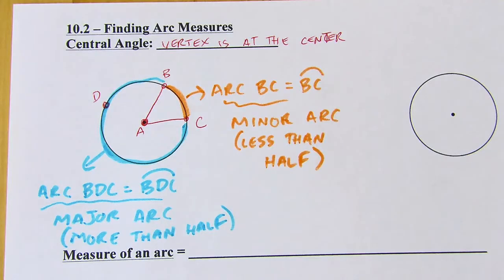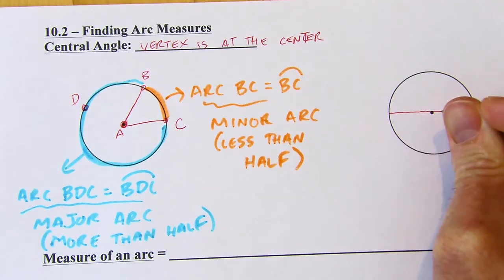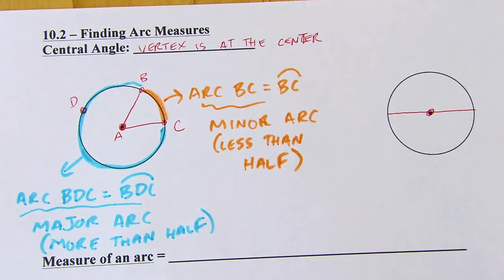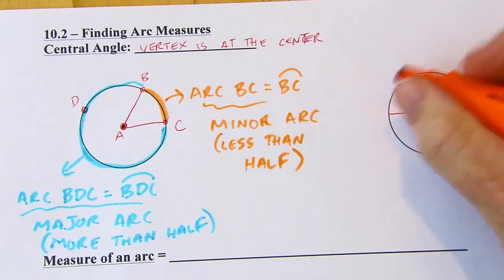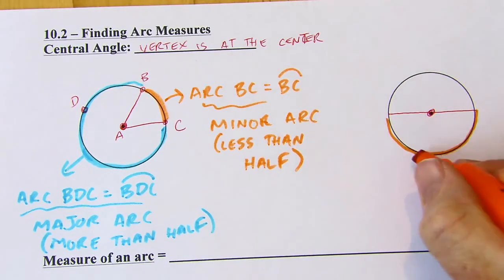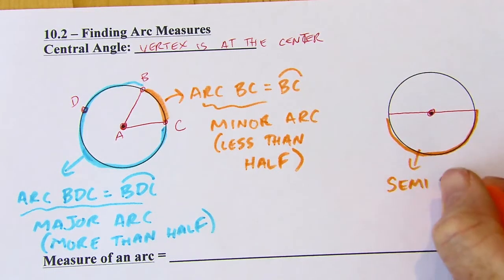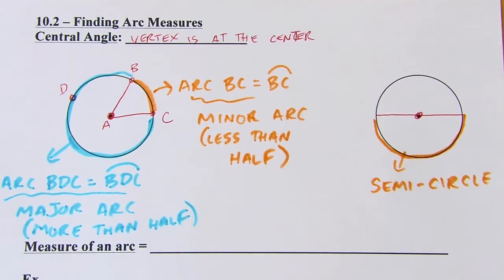And then if you have an arc that's exactly half of the circle, it's called a semicircle. So over here on this other circle, if you just draw in a diameter that goes through that center, that's going to cut the circle into halves. Either one of these halves would be considered a semicircle. Now semester is half of the school year, and a semicircle is half of a circle.